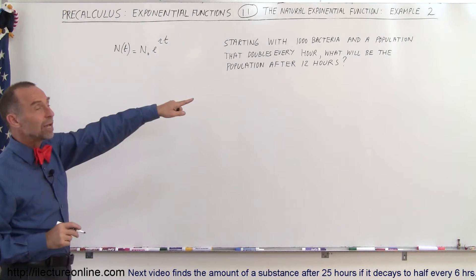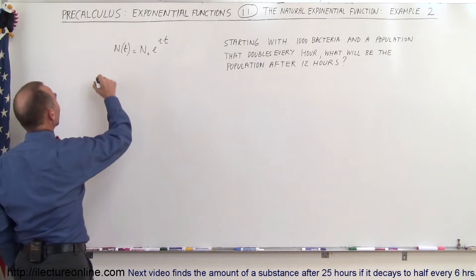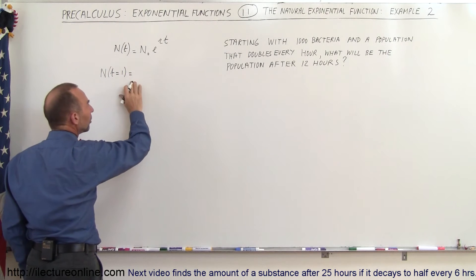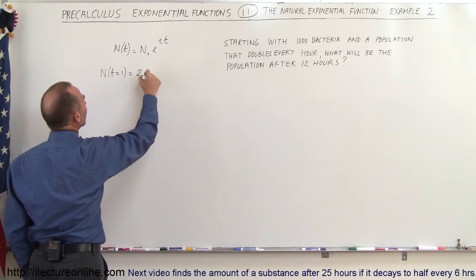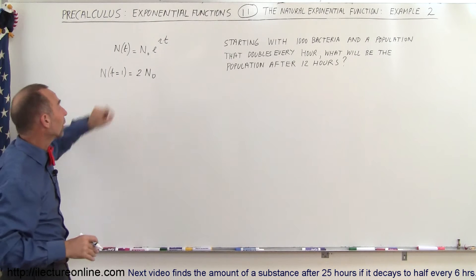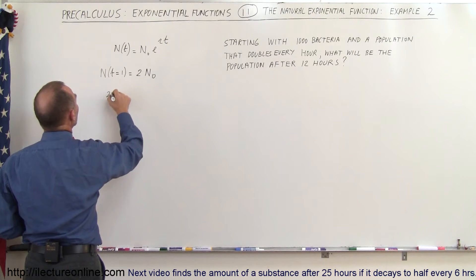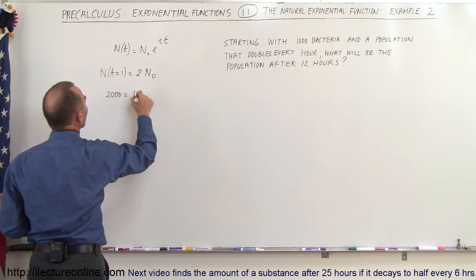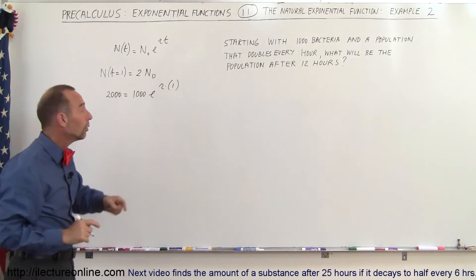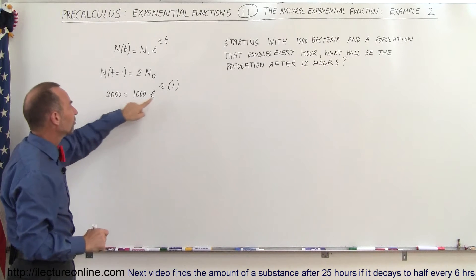We use the information to first figure out the value for r, that constant. We know that the population when t equals 1 is equal to double the initial population — 2 times N-sub-naught — because after 1 hour the population doubles. So we can say: 2,000 is equal to the initial population of 1,000 times e to the r times 1 hour.